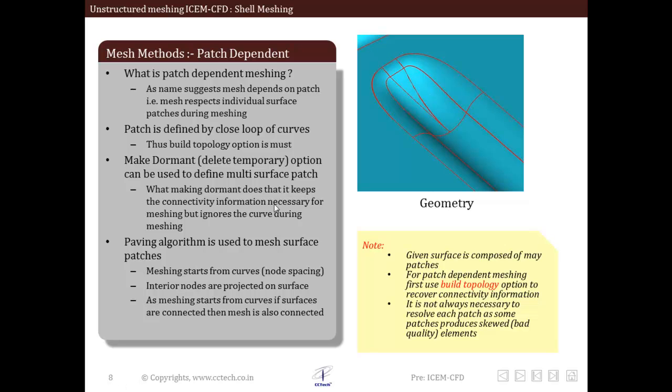This process can be achieved by temporarily deleting the curves, which is called making dormant. This allows the user to ignore the curve during patch dependent meshing, which results in improving quality of mesh.